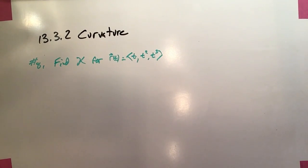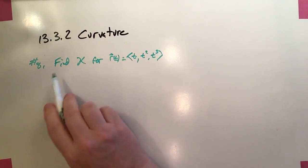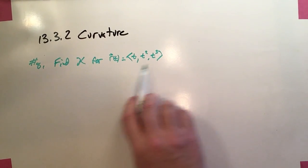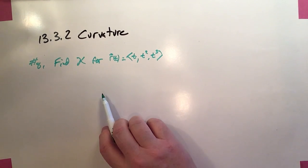Okay, this is section 3.3, second half on curvature, and this is sample problem number eight. We want to find the curvature for this vector function: t, t squared, t cubed.